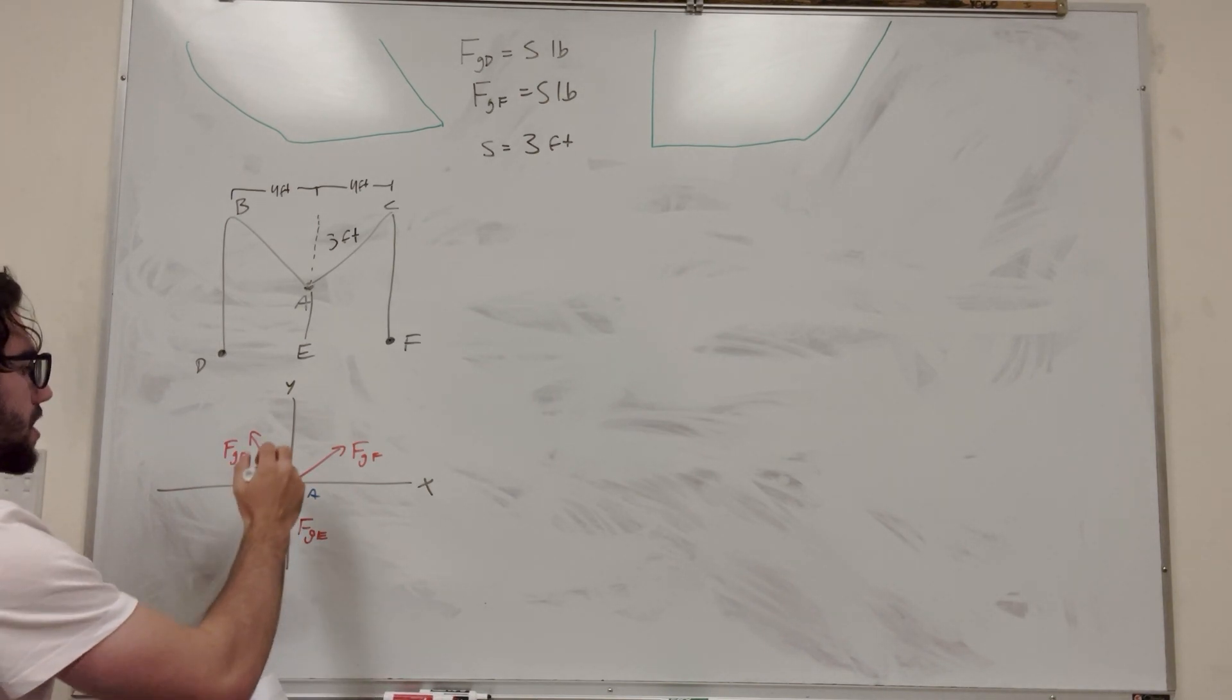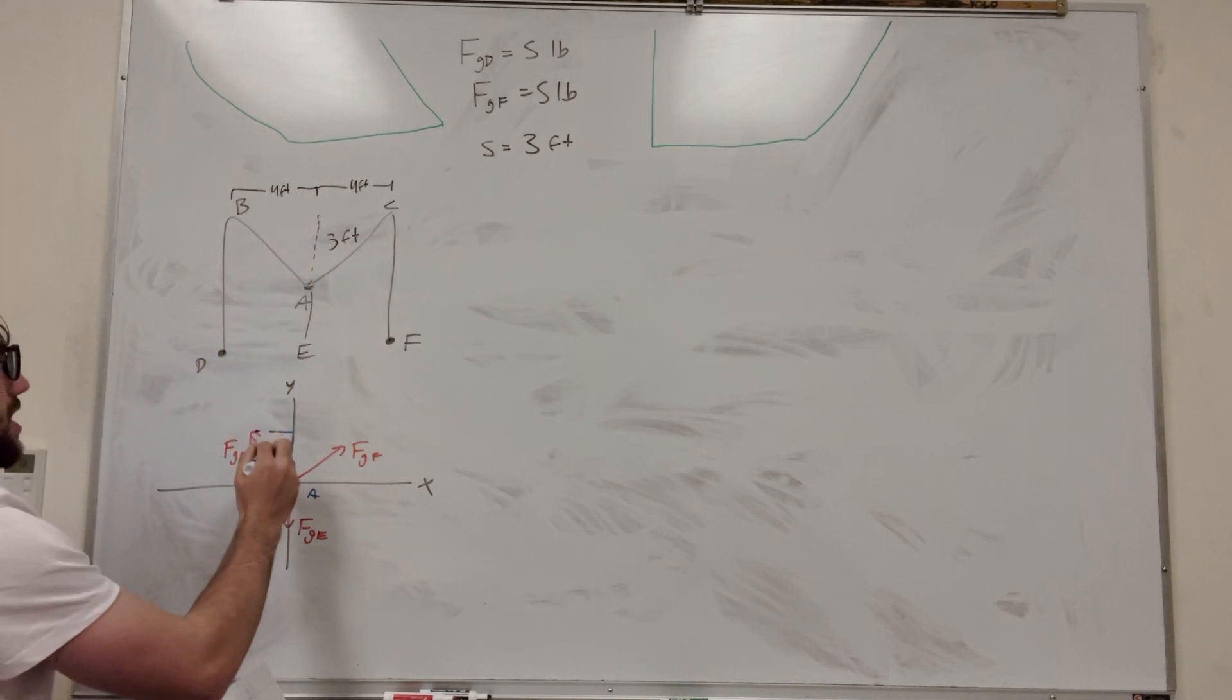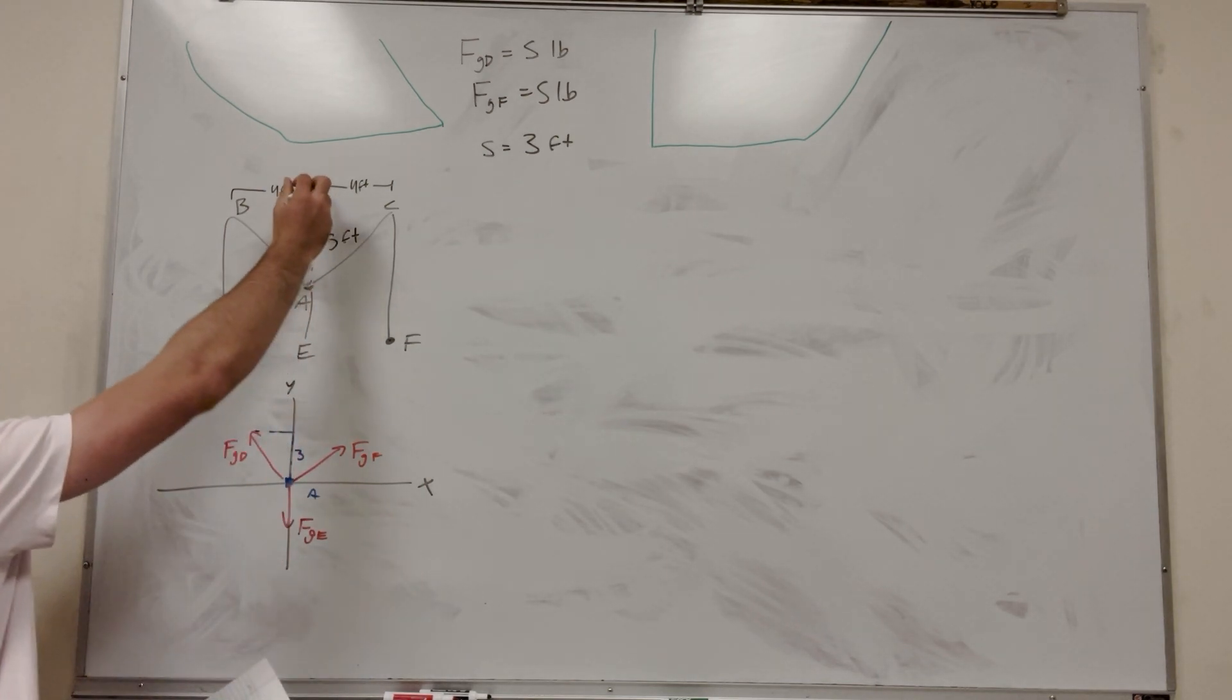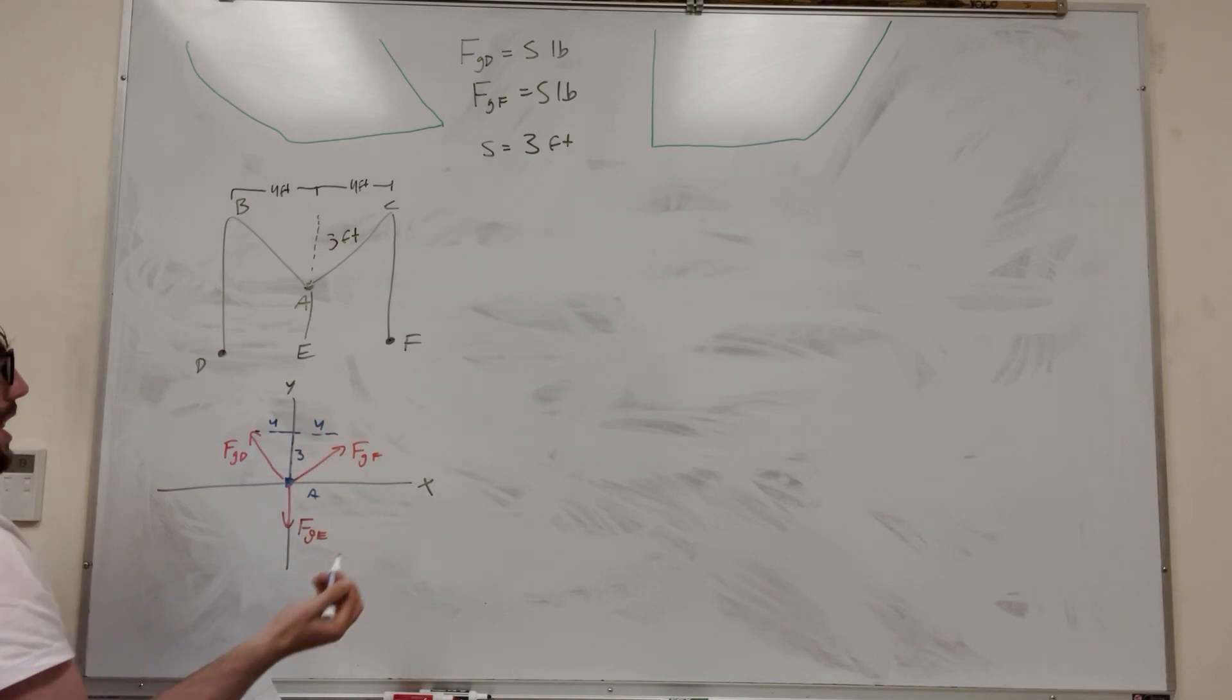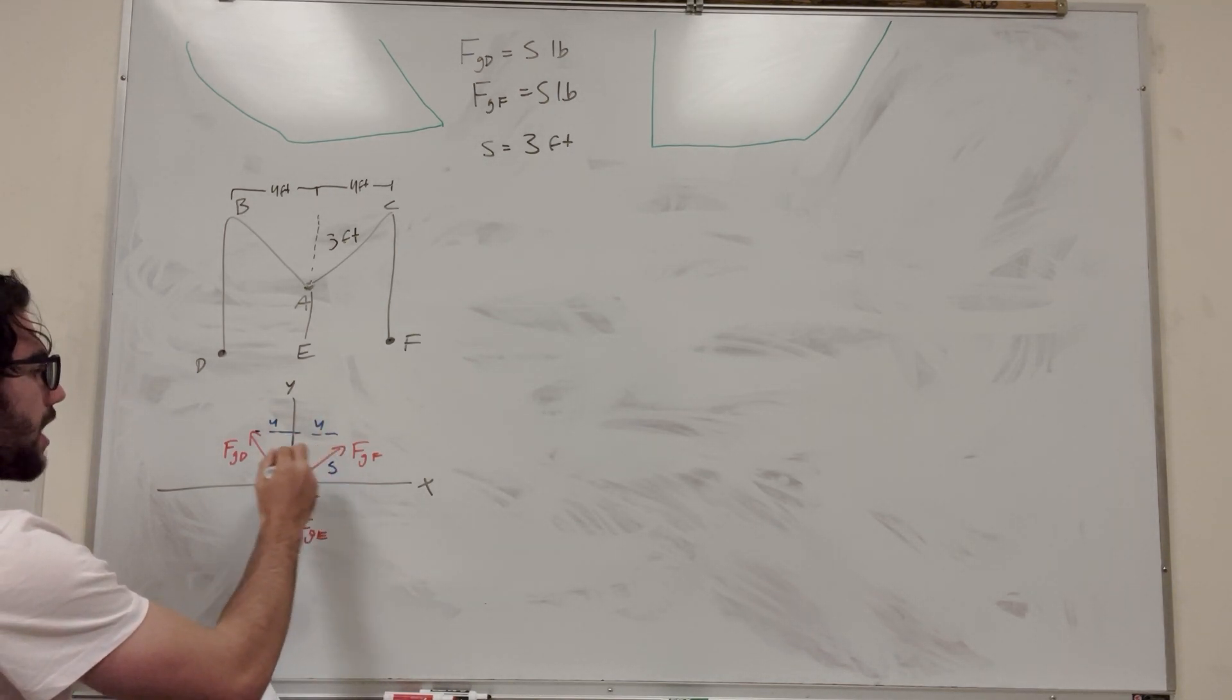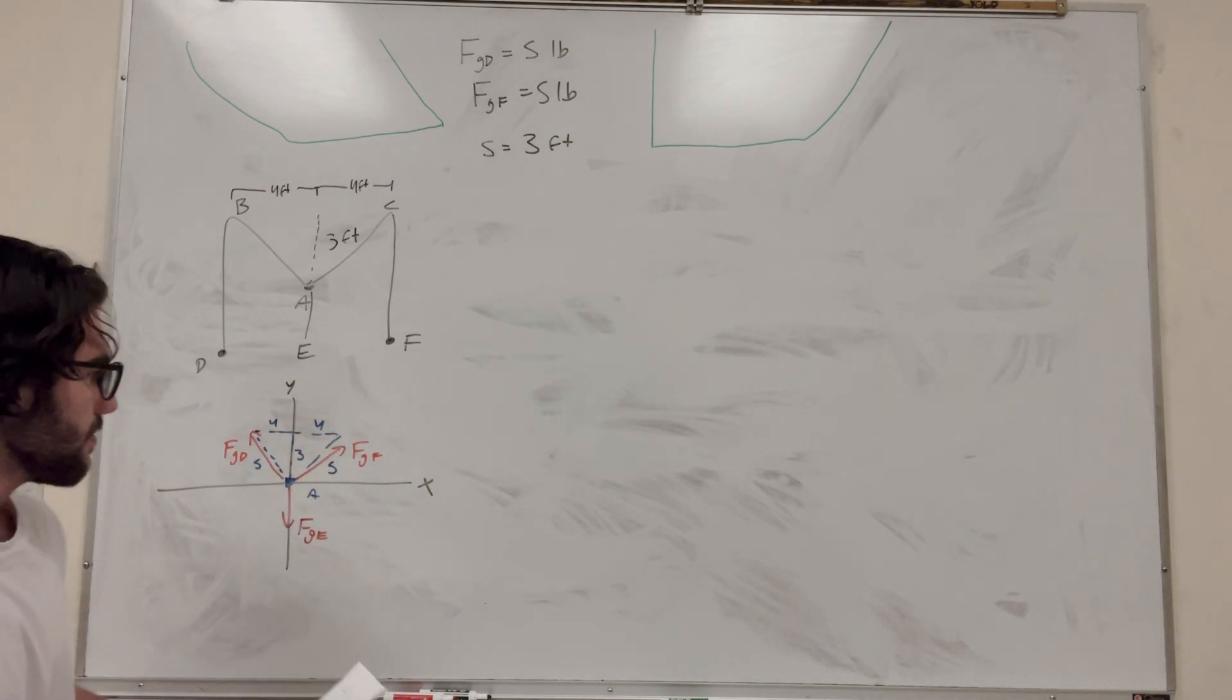And let's think about the numbers of these. So we know that this sag is three feet, so we know that this is three. And then we know that it goes four foot across. So if you use Pythagoras theorem, you know that this is going to be five for the hypotenuse and five for the hypotenuse there. Nice.